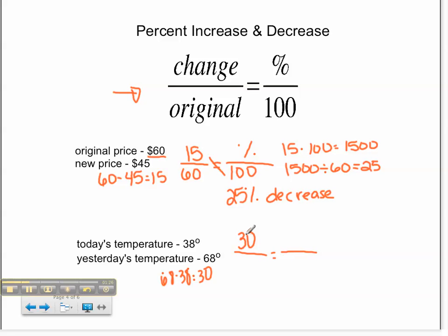That will go right here on top. Then, our original temperature. Since we are talking about the temperature yesterday, and that's our original comparison, 68 will go in the bottom of our proportion.